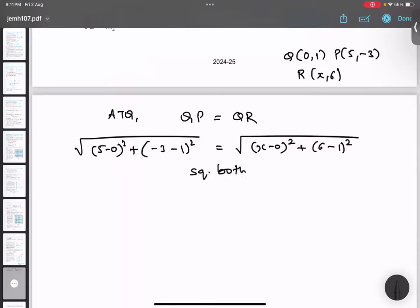Squaring both sides. The square will be removed. 5 minus 0, 5. 5 square is 25. Minus 3 minus 1 is minus 4. Minus 4 square is 16. So X minus 0 is X. So X square would be X square. Only no need to apply any identity. Plus 6 minus 1 is 5, 5 square is 25. So 25, 25 is getting cancelled. 16 equals to X square. Under root of 16 is X. So 4 equals to X.